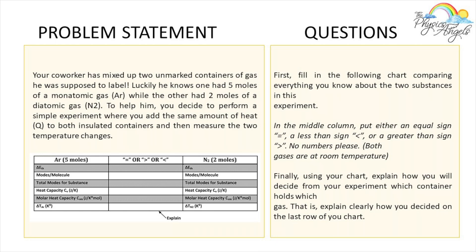This is the problem that we're gonna be solving today. Your co-worker has mixed up two unmarked containers of gas he was supposed to label. Luckily he knows one had five moles of a monatomic gas while the other had two moles of a diatomic gas.